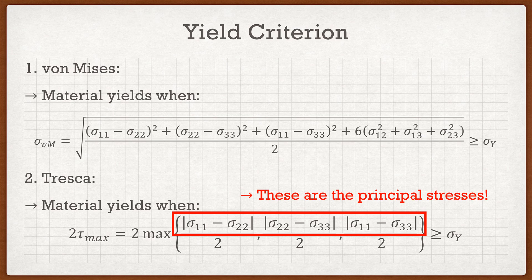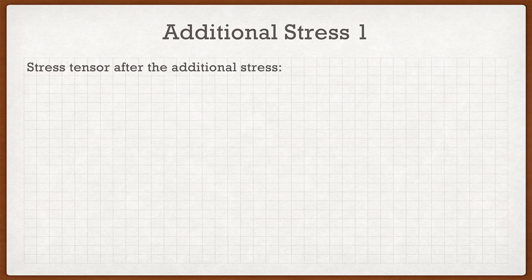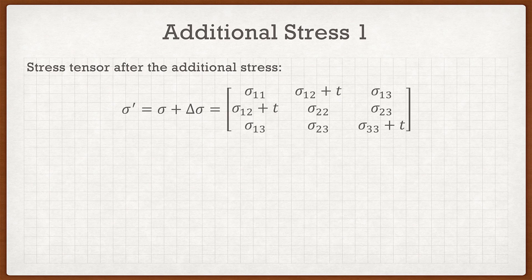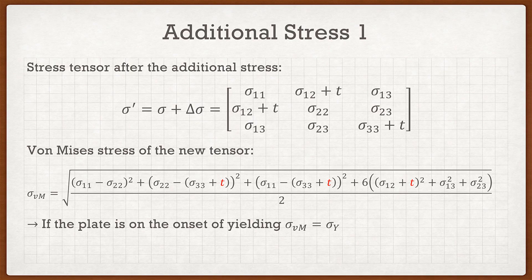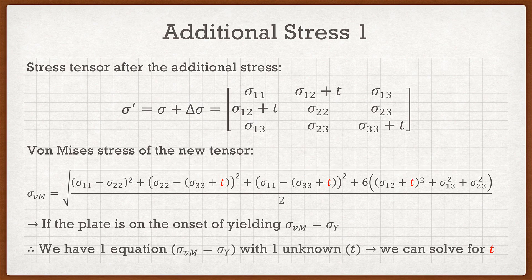So that's the first part — finding whether the material yields under the two criteria. As I said, chances are it won't yield under von Mises, so now we figure out what value of T will make it yield. Our new Cauchy stress matrix after adding the additional stress has sigma_12 with an added T, and sigma_33 with an added T. I can then apply the von Mises formula to this new matrix, substituting sigma_12 and sigma_33 with those plus-T terms shown in red. The goal is to set this von Mises stress equal to the yield stress of 496 MPa — one equation, one unknown T.